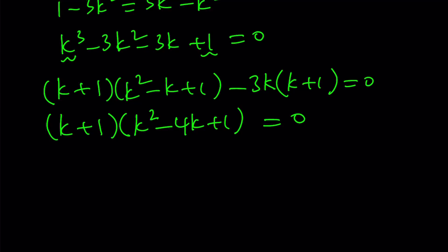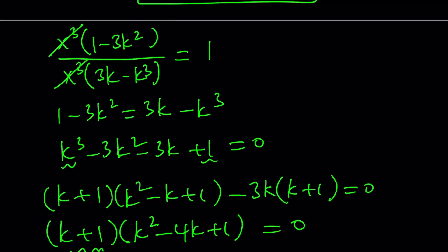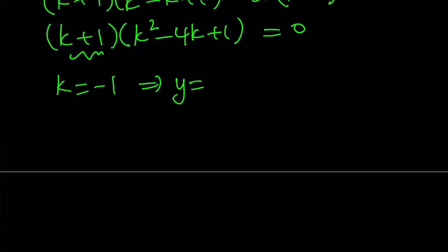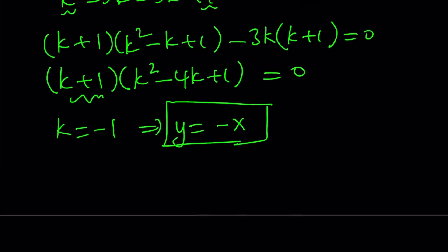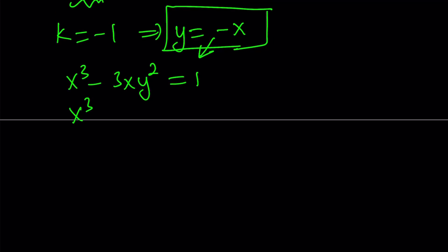From here we get three solutions. I'm not going to fully find all the solutions, but I'll show how to proceed. Let's look at the easier factor first: k plus 1 equals 0, giving us k equals negative 1. Since k equals y over x, we can write y equals negative x. We substitute this into our first equation, x cubed minus 3xy squared equals 1, replacing y with negative x.